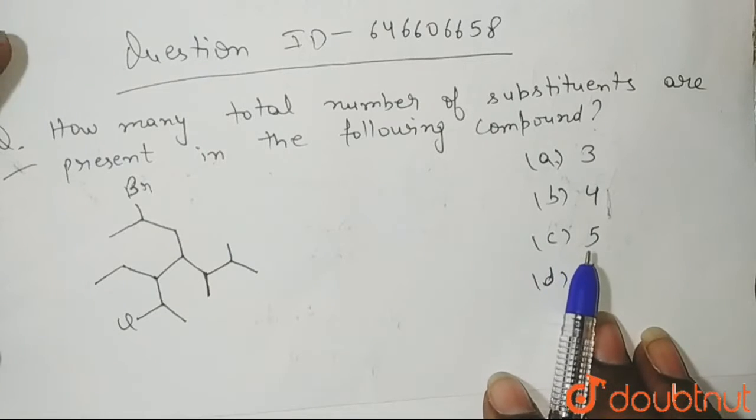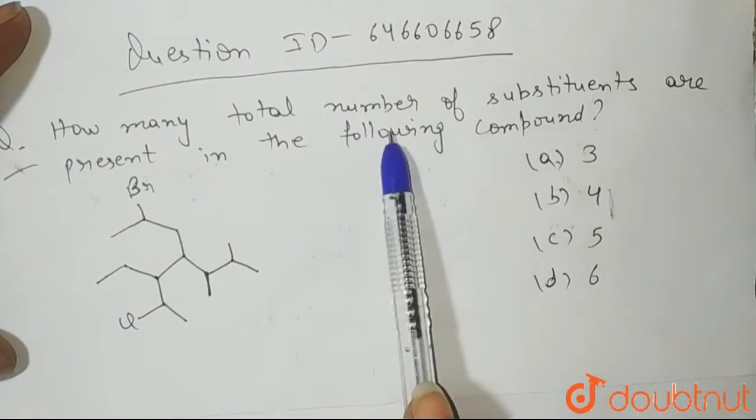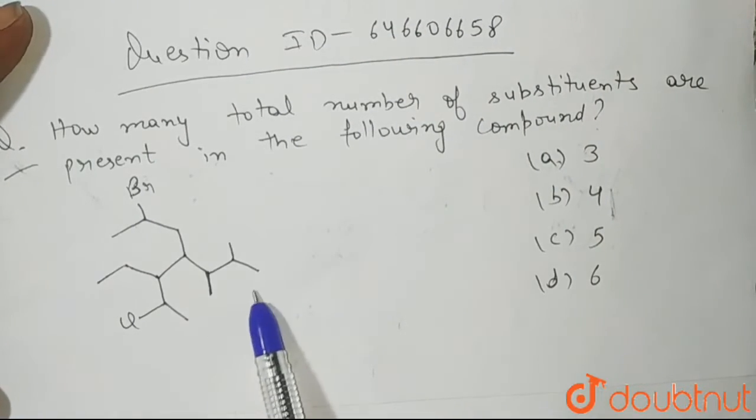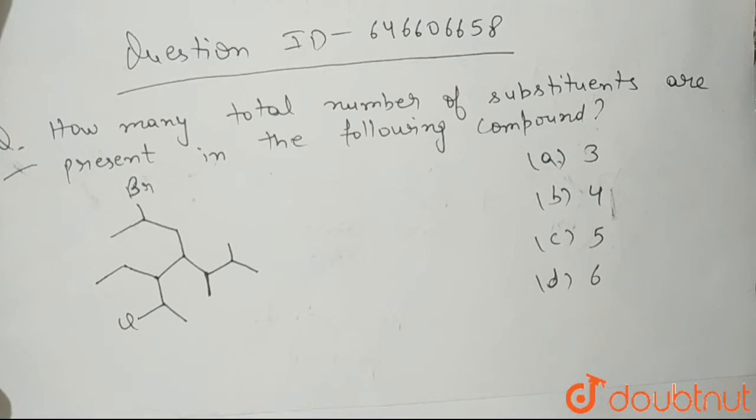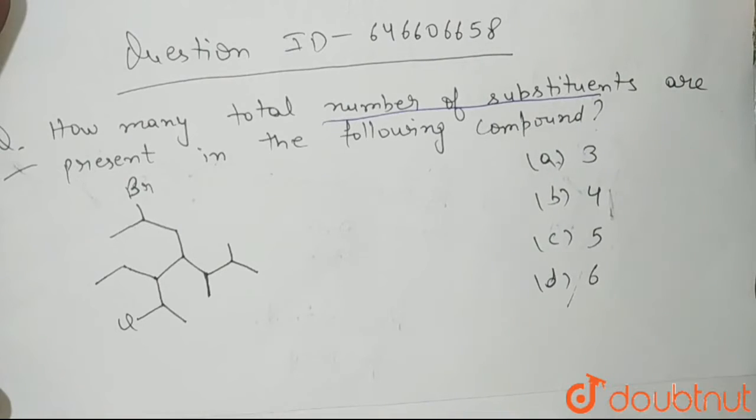Hello students, the question is how many total number of substituents are present in the following compound? So this is the compound given to us and we need to tell how many number of substituents are present in this compound and these options are given to us.